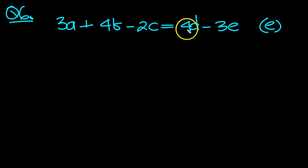3a plus 4b minus 2c equals 4d minus 3e, and we want to solve this for e. Here's where the e's are, just here, nowhere else.